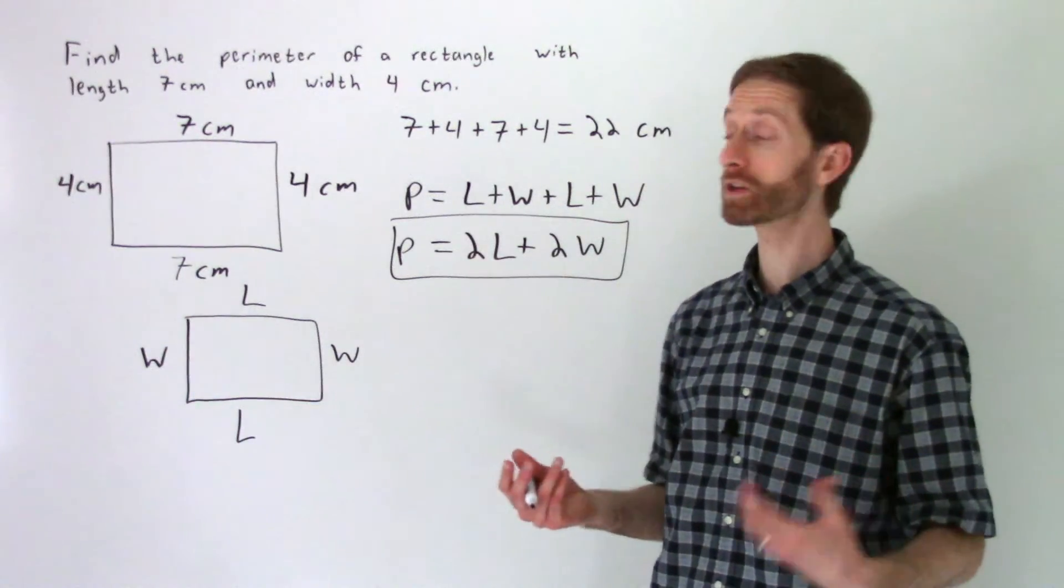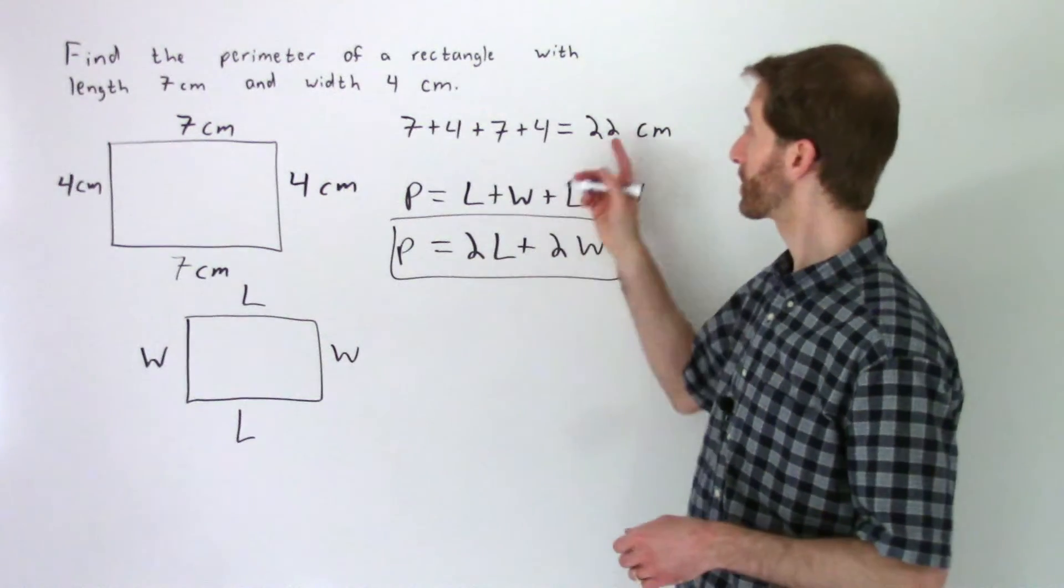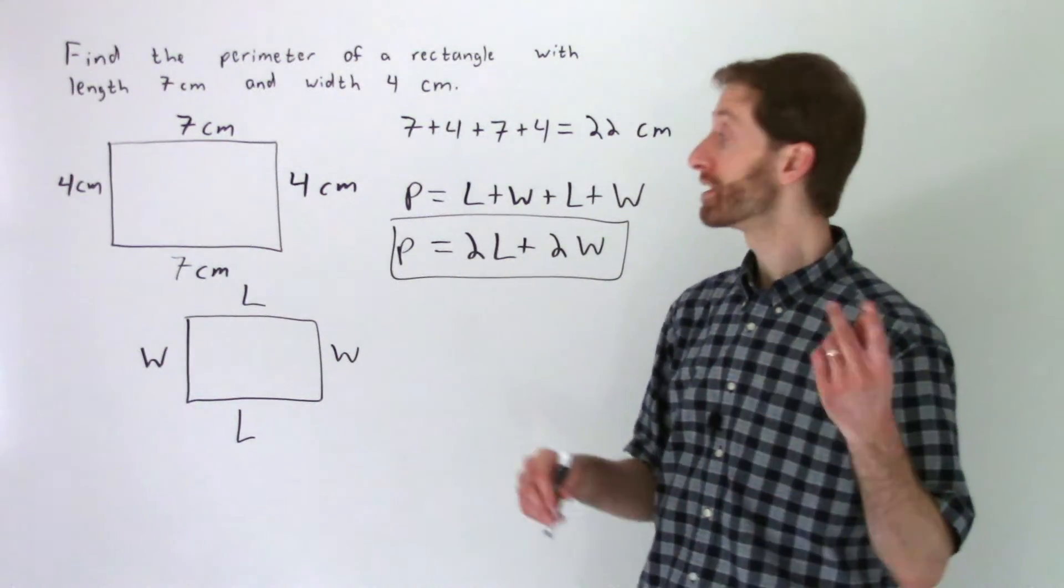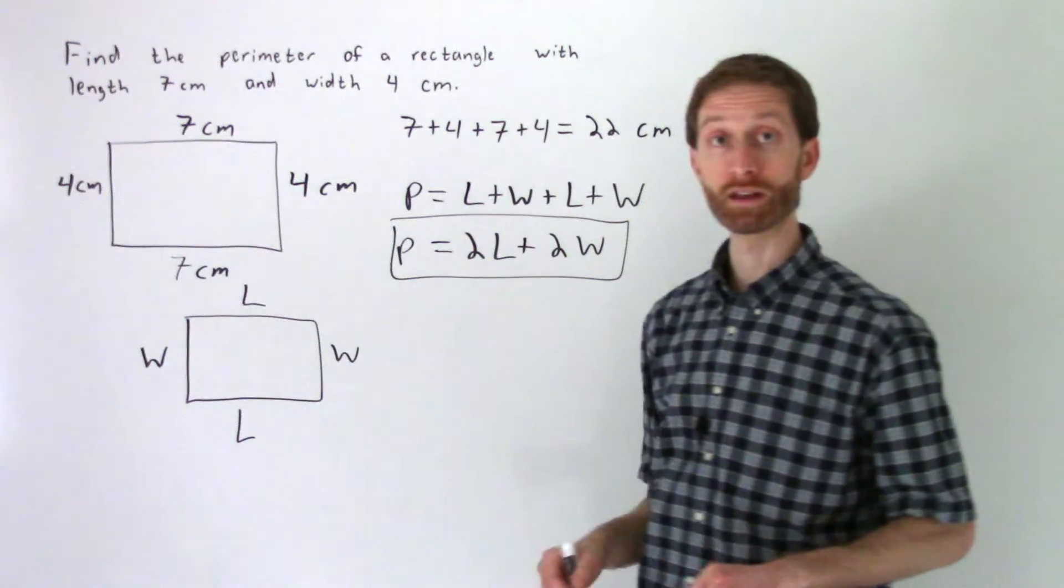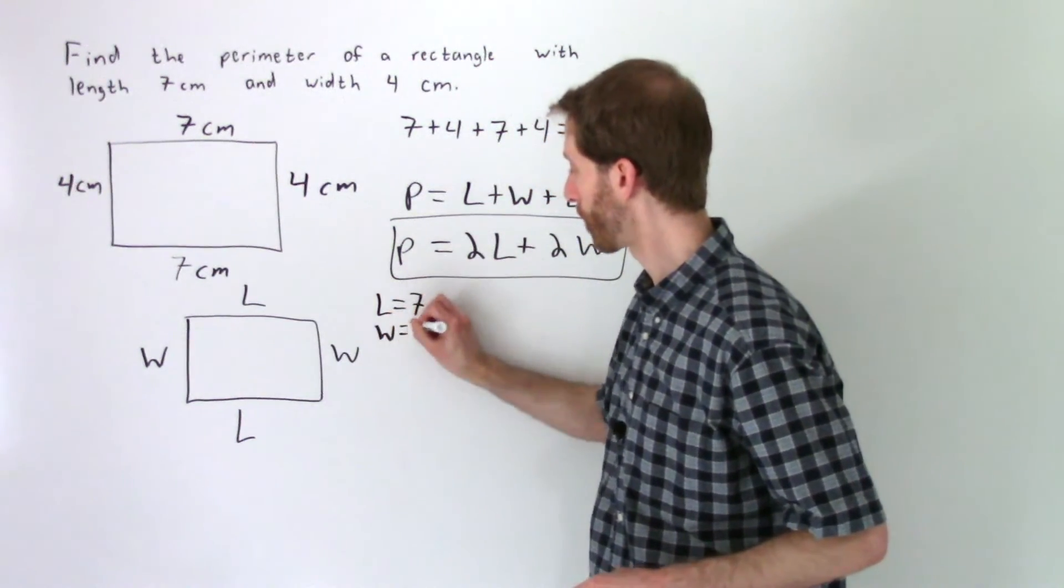Let's see how this formula now works for us with the same exact problem. So another way to get to the 22 centimeters, we can notice that our length is seven, and that our width is four. So I'm just going to write that off to the side here. So the length is seven, and the width is four.